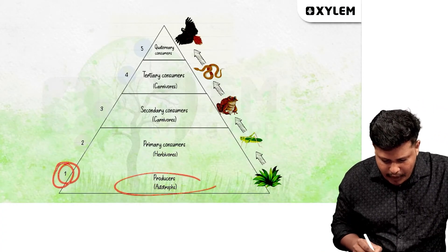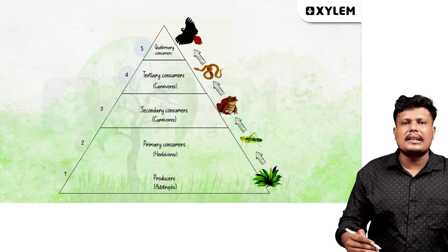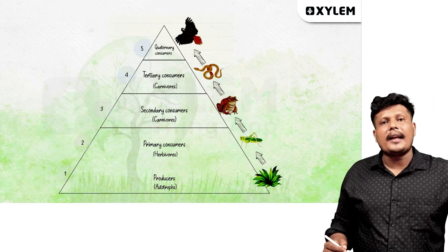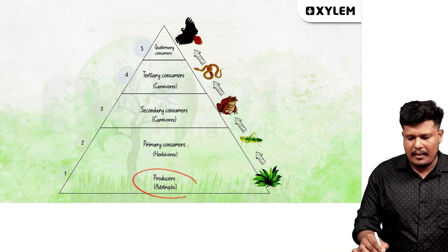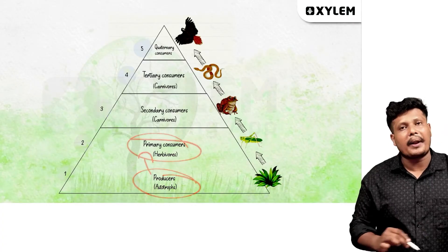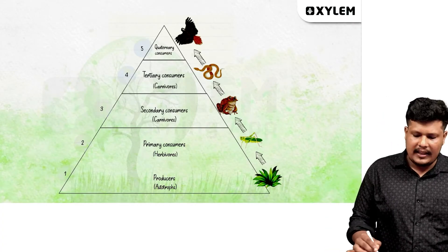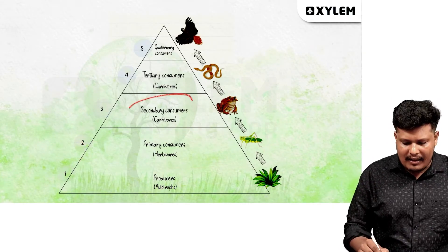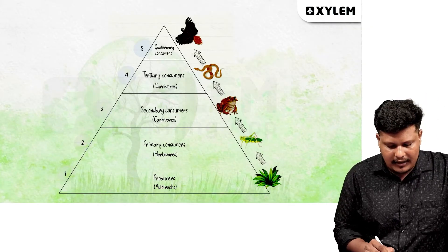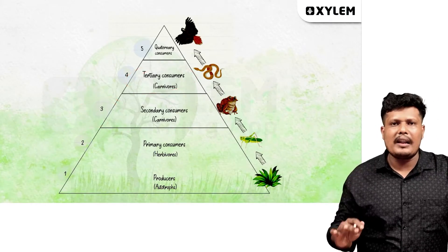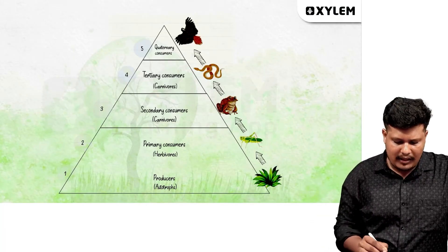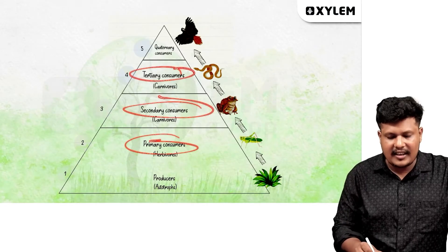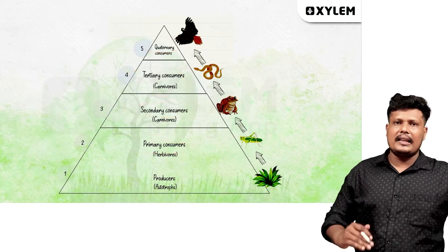The first trophic level is the producer. The producer is at the first trophic level. The primary consumer — herbivore, plant-eating animals — is at the second trophic level. Carnivores are at the third trophic level. Then the tertiary consumer is at the fourth trophic level. You go: primary consumer, then secondary, then tertiary, then quaternary up the food chain.